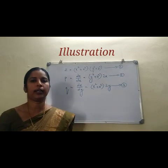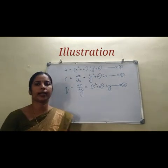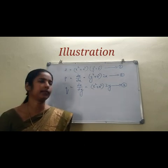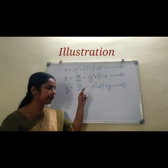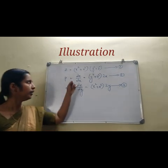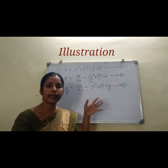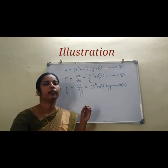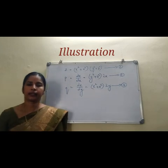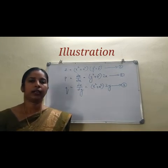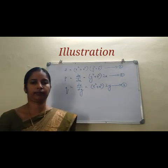Next, q = dou z by dou y. You have to keep x as a constant, so x² + a² is a constant. The derivative of constant times a function is constant times derivative of the function. Differentiating y² + b² with respect to y gives 2y, so q = 2y(x² + a²). Next, you have to eliminate a and b from equations 1, 2, and 3.